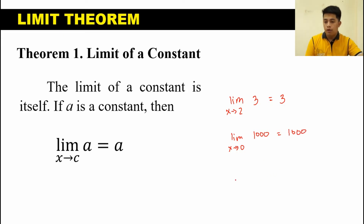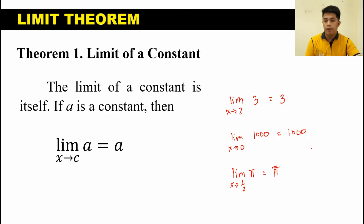Another example is the limit of pi as X approaches 1 half is equal to pi. Since pi is considered a constant value — it has a value of 3.1416 and it is not a variable — therefore, the limit of pi is itself.